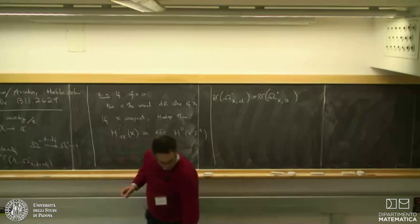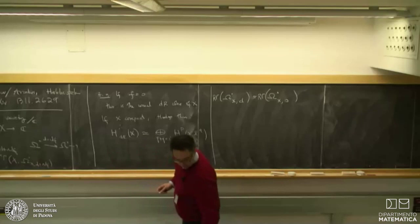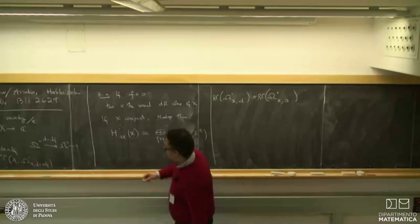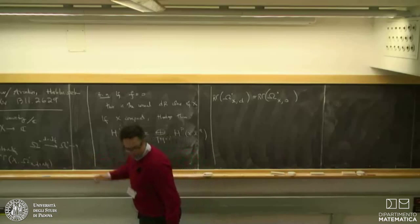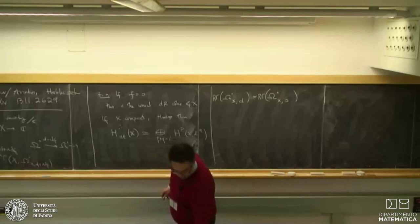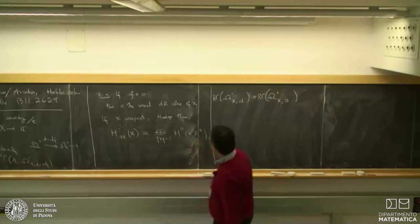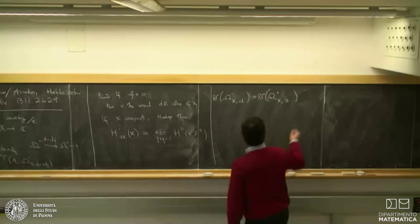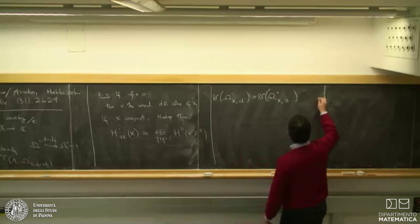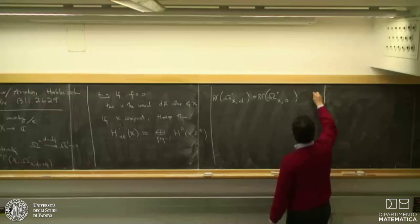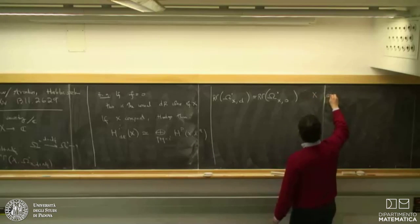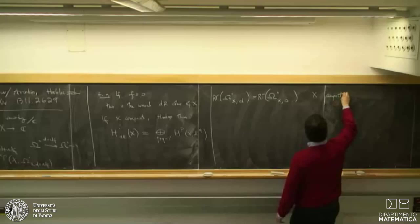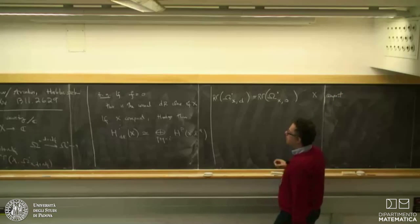Here X must be compact; otherwise this fails. There is a result — announced by Baranikov and Sabbah and then proved by Sabbah — which says that in the twisted case, assuming the critical locus of f is compact, these two vector spaces are isomorphic: Rγ of omega dot of X with differential d + wedge df, and Rγ of omega dot of X with differential just wedge df. You completely throw away the d, the non-O_X-linear part, and get the same hypercohomology.